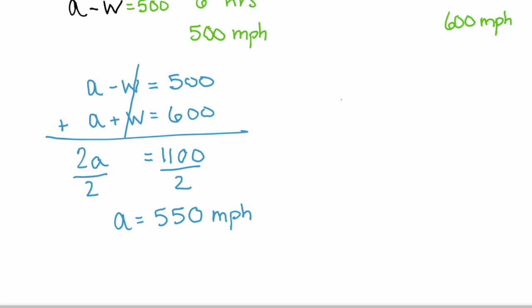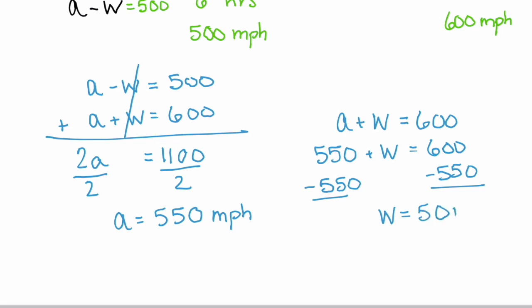Well what about the wind? Go back to one of your original equations. How about airplane plus wind equals 600? Well our airplane is 550 miles per hour. So if we subtract 550 from both sides, we see that the wind speed is 50 miles per hour.